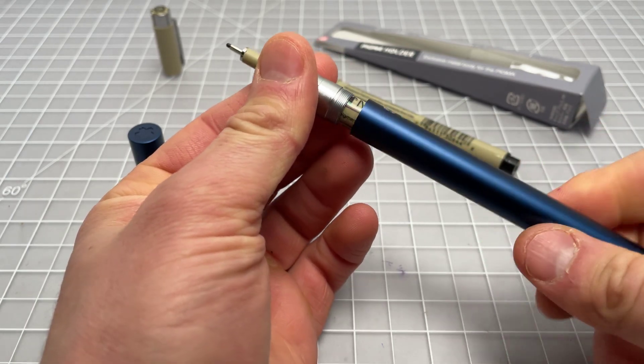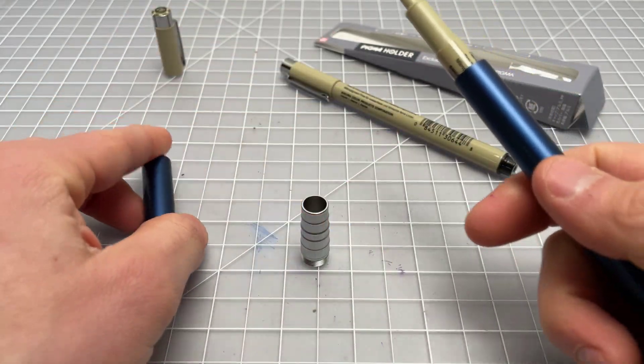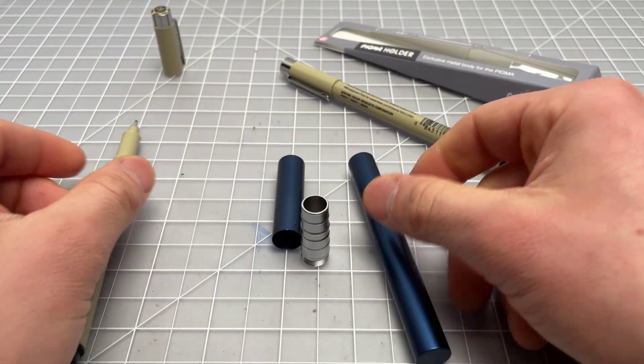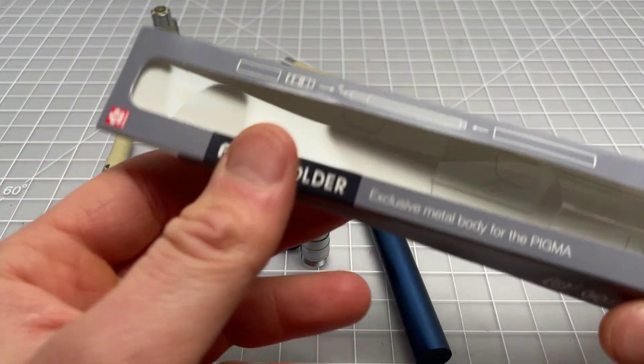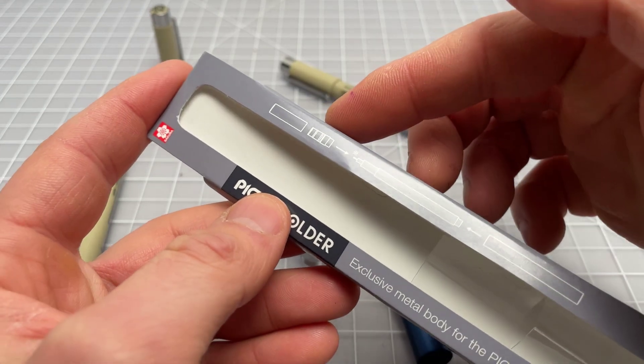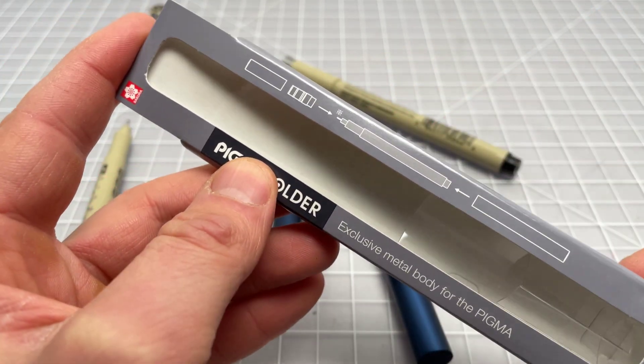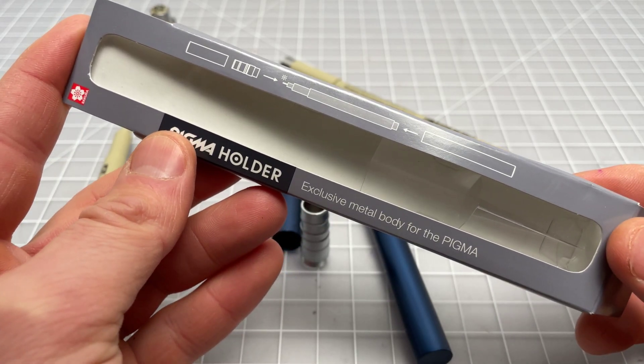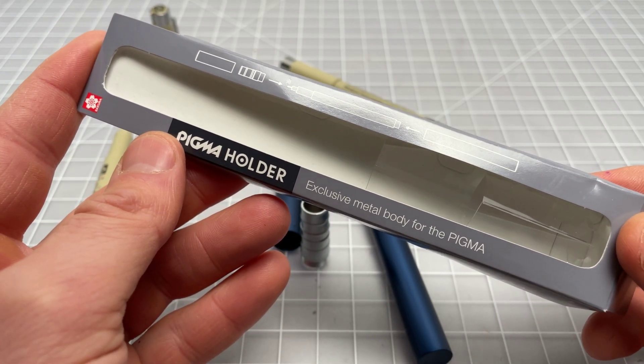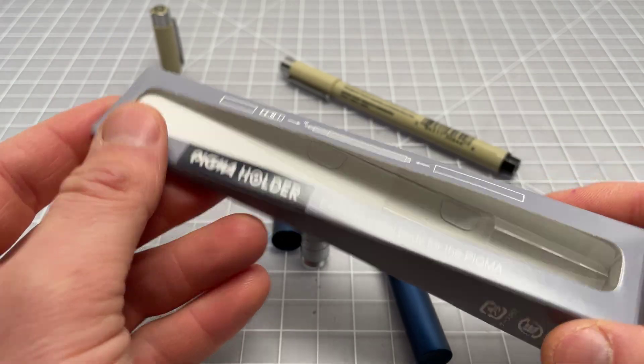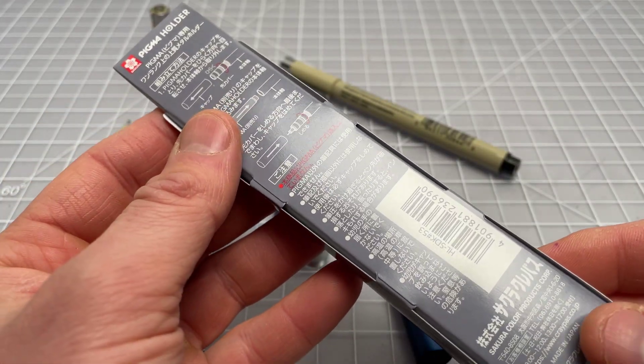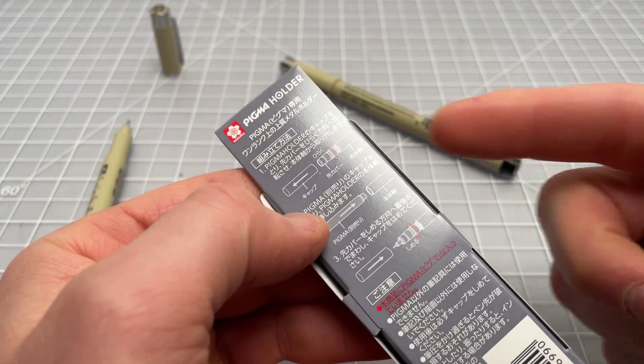The case is very simple. It's a three-piece design. Comes like this. I'll just jump into the box for a second. Here are the instructions. You put your marker inside, put the pieces together and screw it in. This is an exclusive metal body for the Pigma from Sakura.